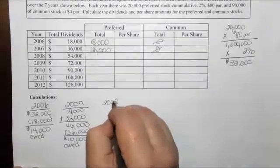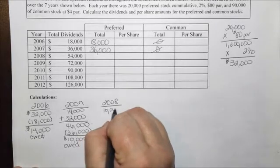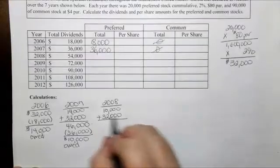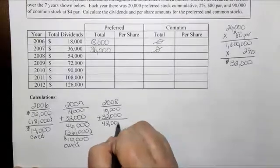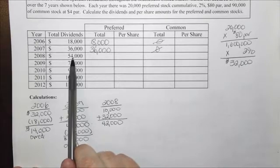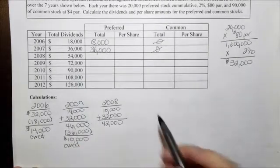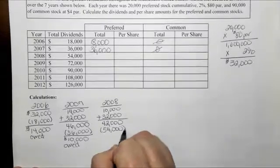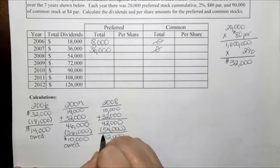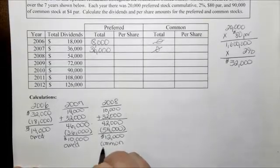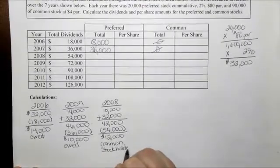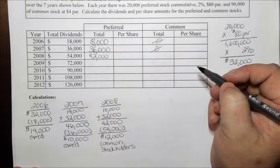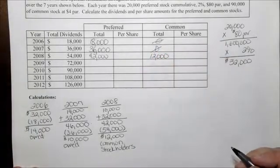In 2008, we have the $10,000 balance owed plus the $32,000 that should be paid out, so the total that should be paid out is $42,000 for the year. In this particular year, $54,000 in total dividends were declared. We take $54,000 minus $42,000, leaving $12,000 that goes to the common stockholders. So $42,000 goes to the preferred stockholders and $12,000 goes to the common stockholders.